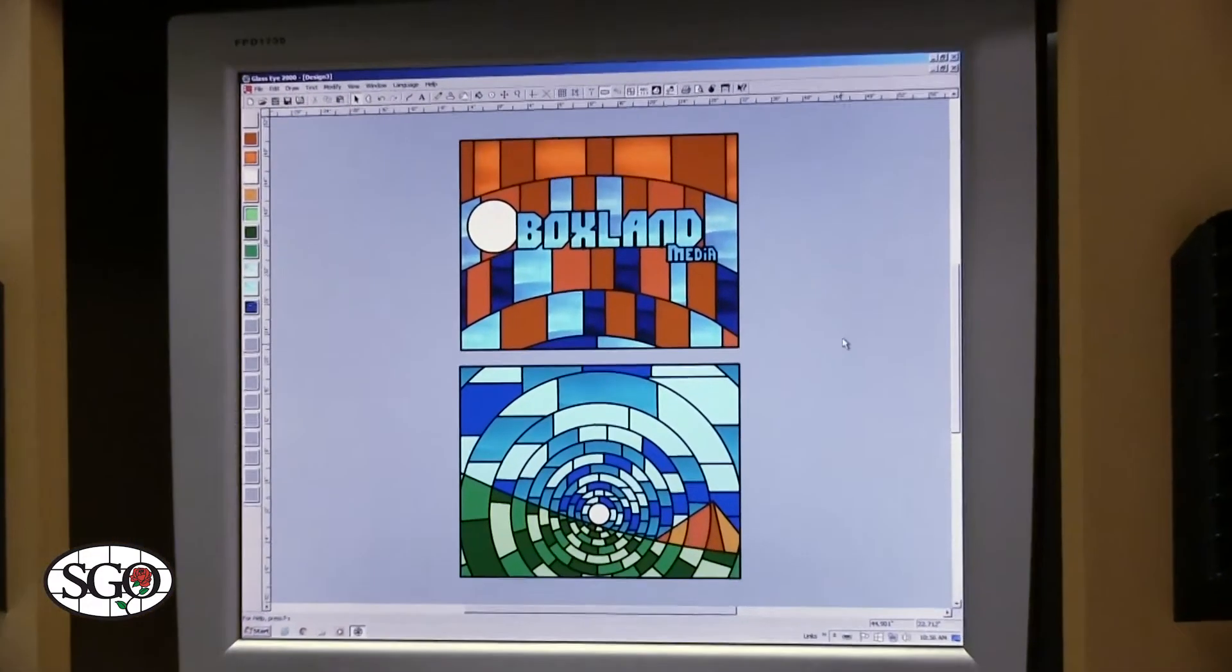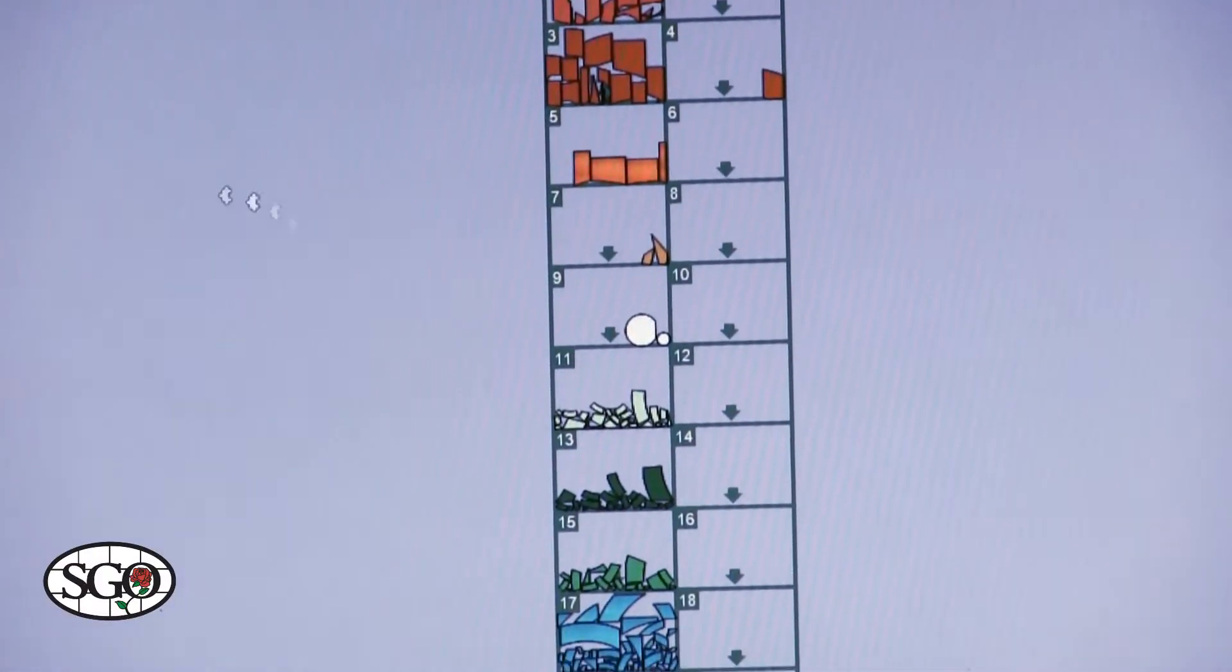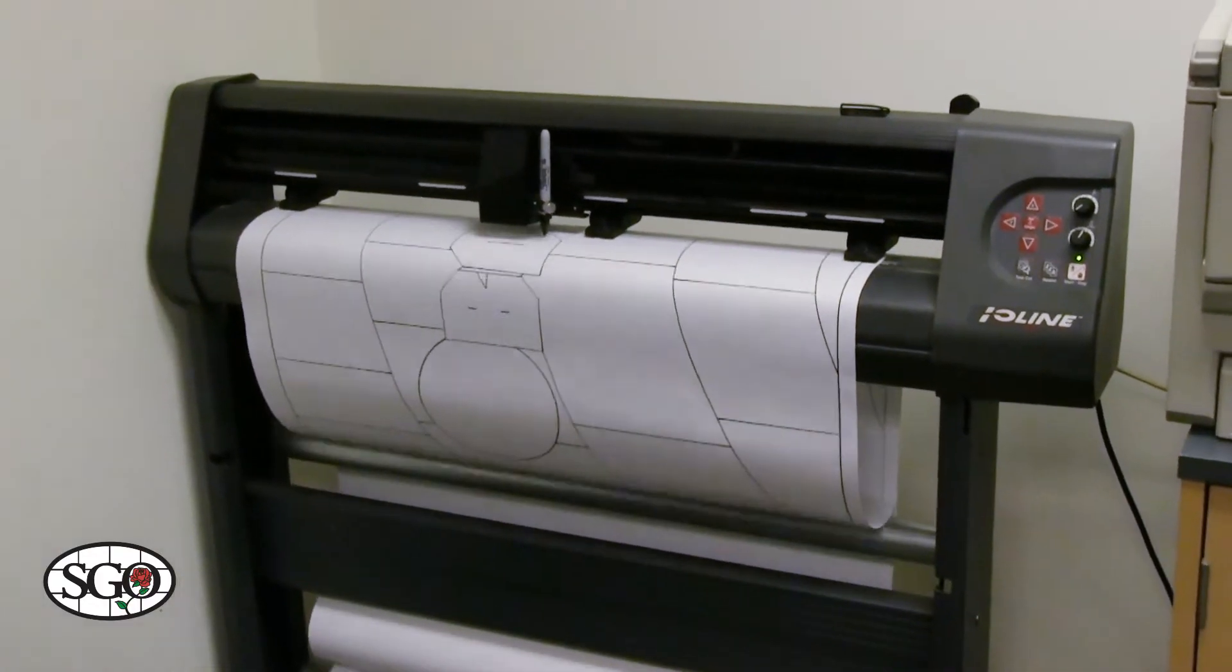We do the design on the computer using the colors that they've selected. Once we have that, then we do what we call exploding it. And what that does is it takes that design and picks the pieces apart. And then we go over to our plotter.